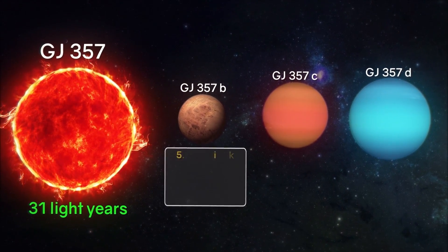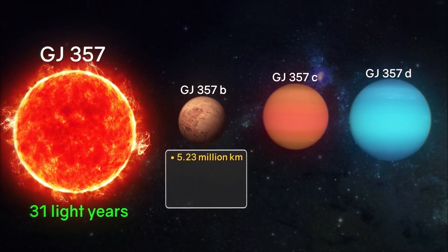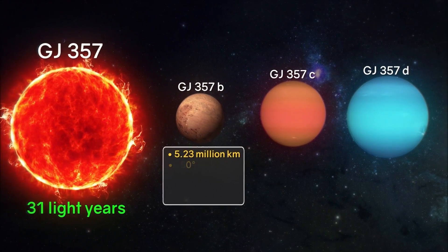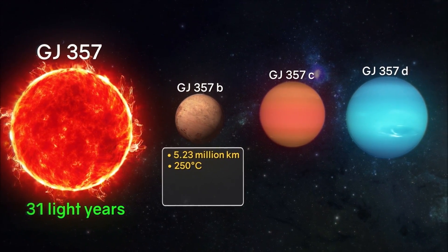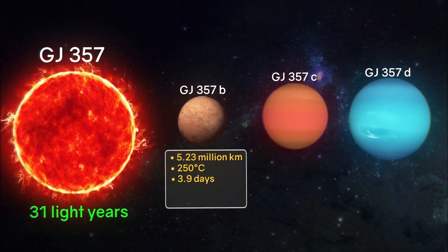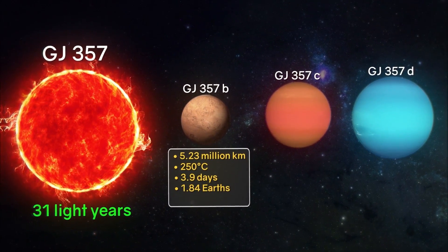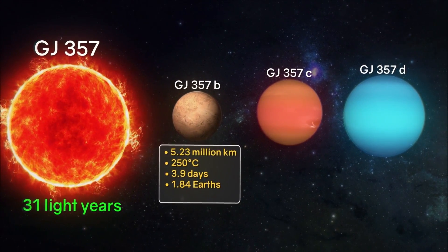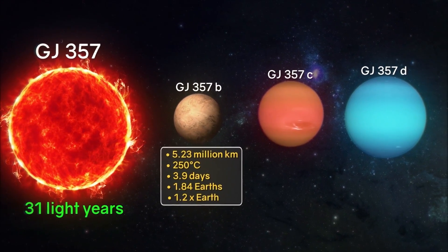GJ357b: The distance to the star is about 5.23 million kilometers. The average surface temperature is 250 degrees Celsius. The period of rotation around the star is 3.9 days. The mass is about 1.84 times that of the Earth. Size 1.2 times the size of the Earth.